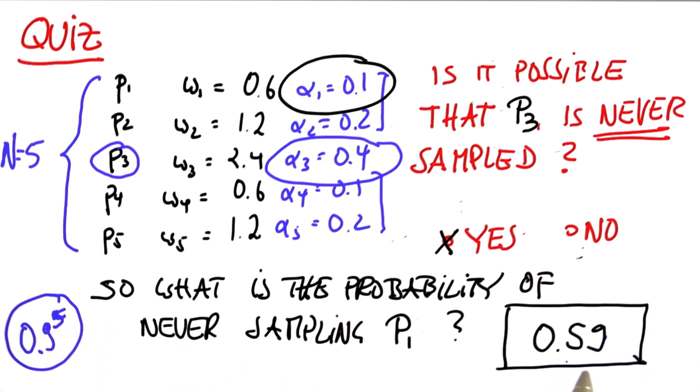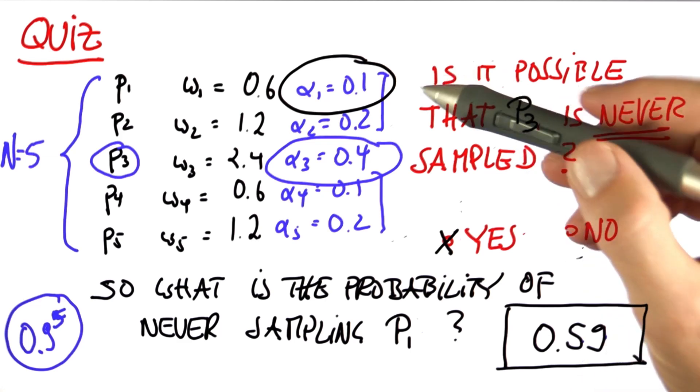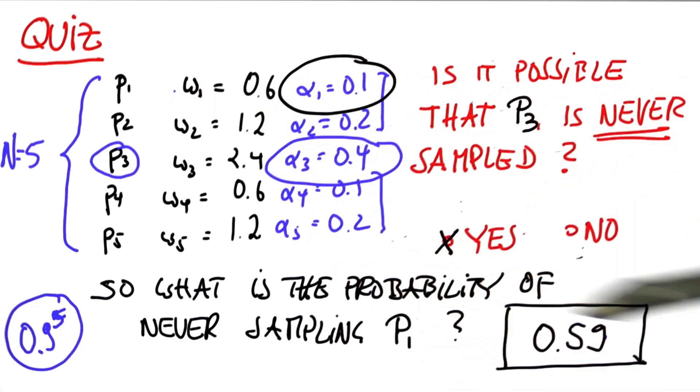Now this means, with about 60% chance, we will lose particle one. And only with 40% chance, we will include it.